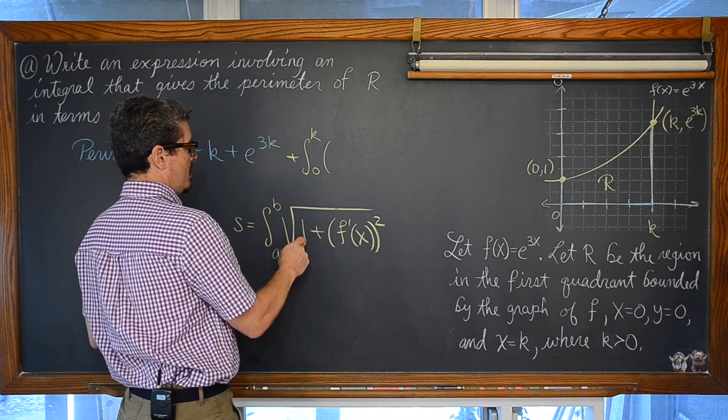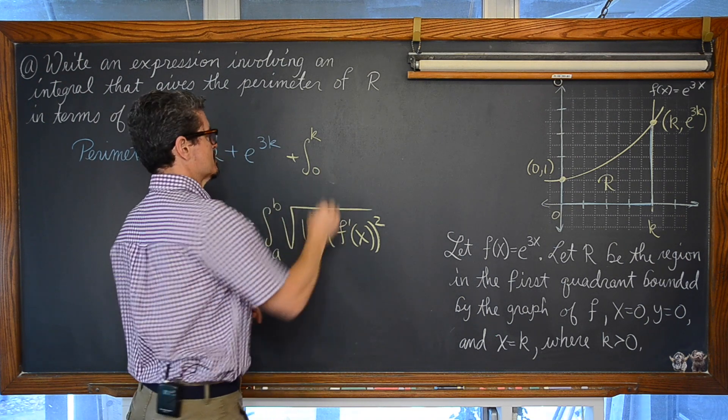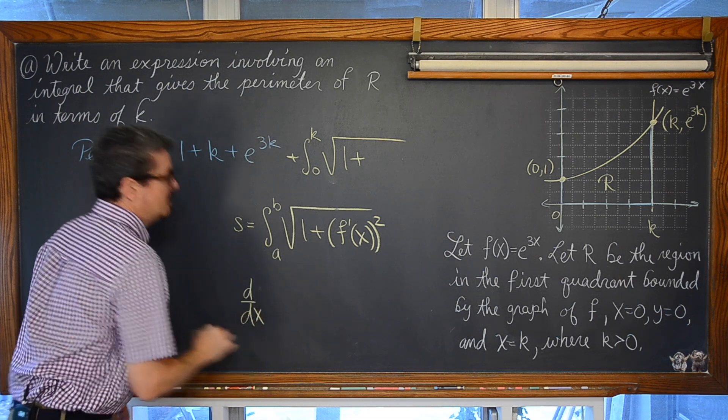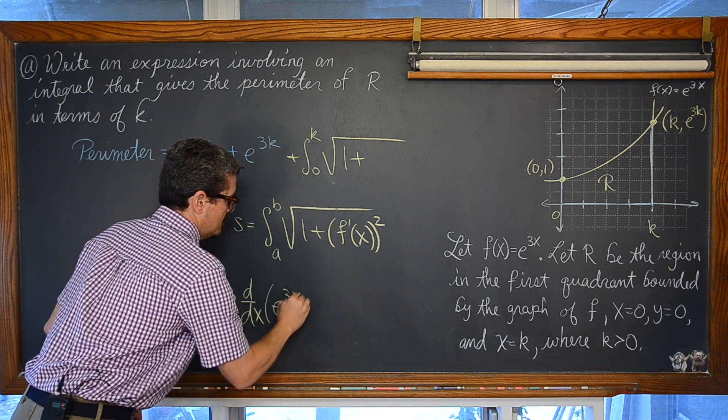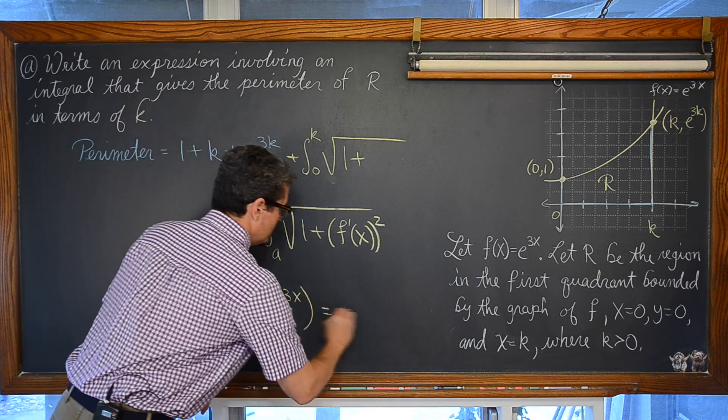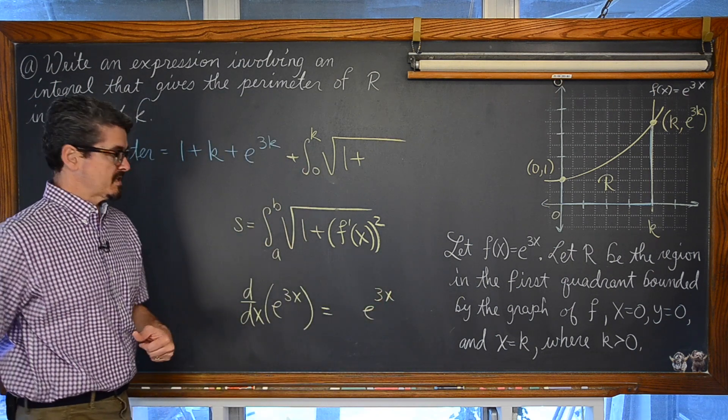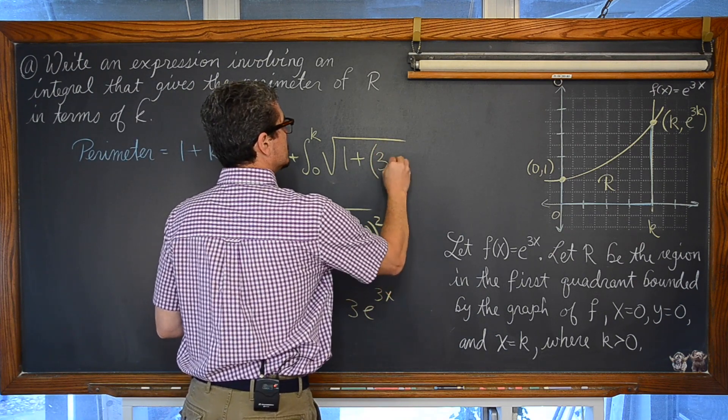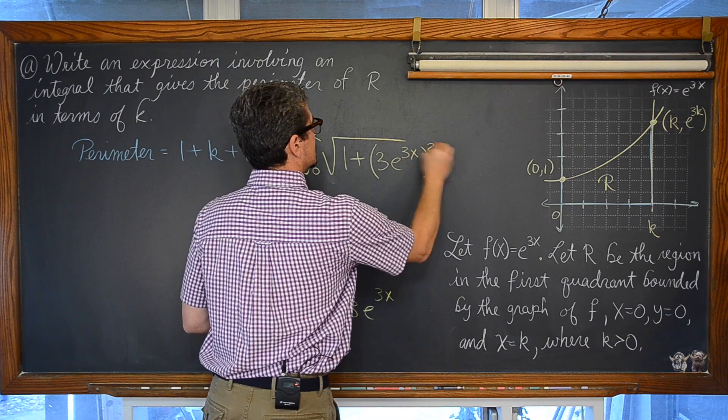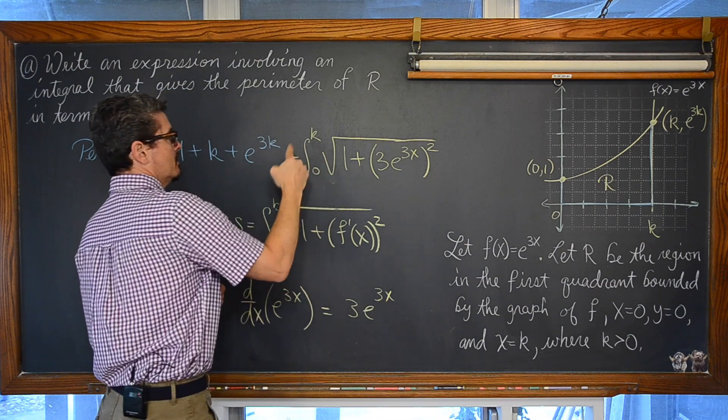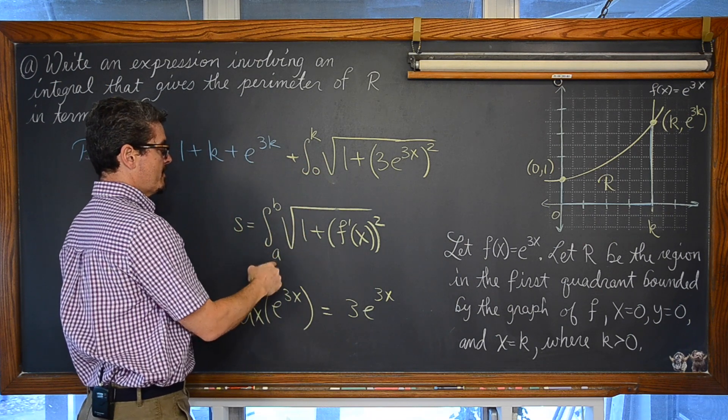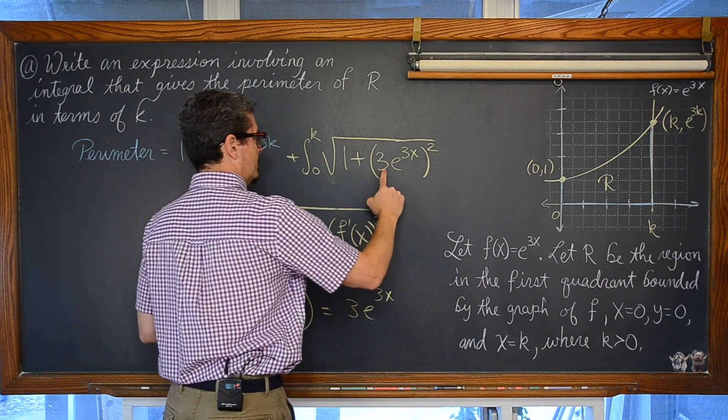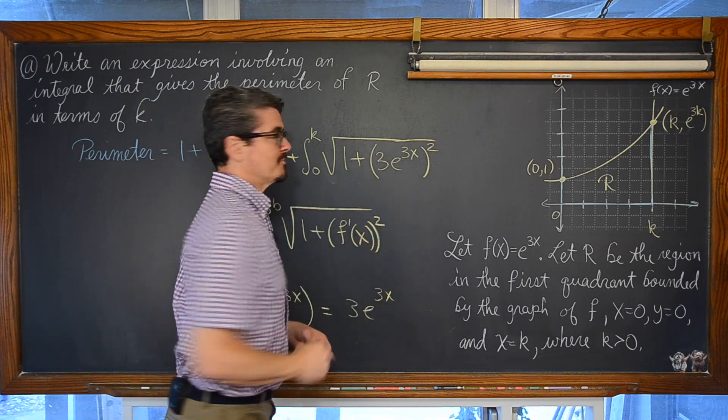And you probably would do this naturally anyway, but you want to make sure that the variables in your integrand do not match the variables if you have any for your lower and upper limits. And we do have that the function is the part of the graph described by the function f of x is equal to e to the 3x power. So you are going to be looking for the square root of 1 plus we need to find the derivative of e to the 3x. Well the derivative of e to the u is e to the u times u prime. So there you go. We have 3 times e to the 3x squared. Right? The arc length is equal to the definite integral from 0 to k of the square root of 1 plus f prime of x squared. And that is part 1.